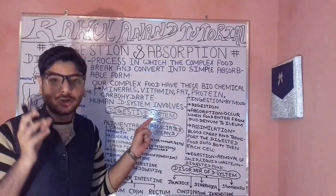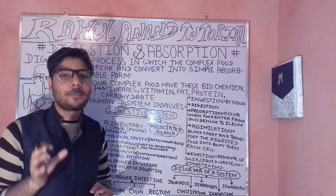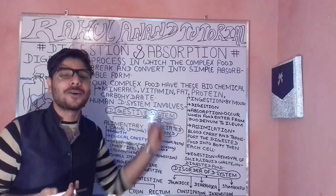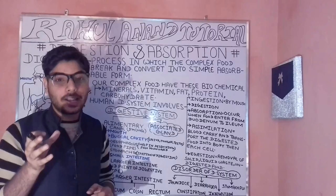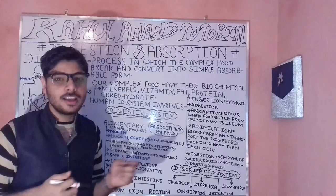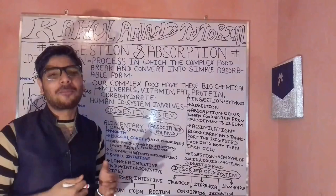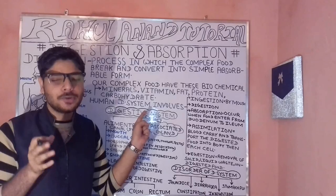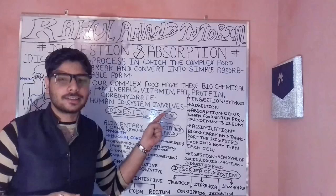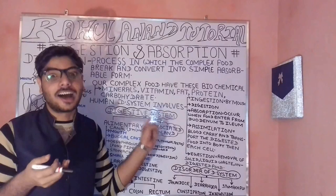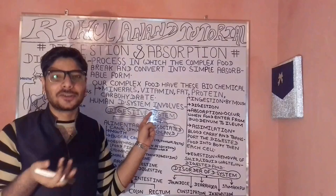Complex food contains ingredients in the appropriate ratio. From the process of digestion, we get essential biochemical components such as minerals, vitamins, fat, protein, and carbohydrates, etc.